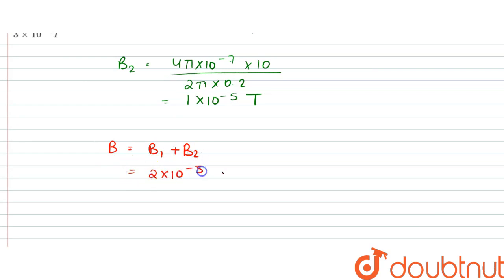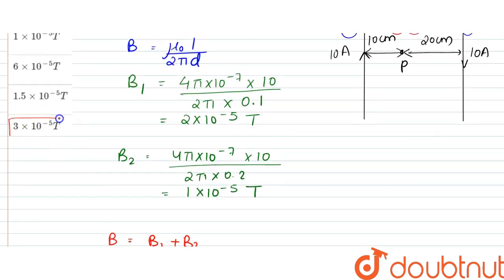Which is equal to 2 into 10 to the power minus 5 plus 1 into 10 to the power minus 5 tesla, which turns out to be equal to 3 into 10 to the power minus 5 tesla. So our answer is 3 into 10 to the power minus 5 tesla, that is option B.